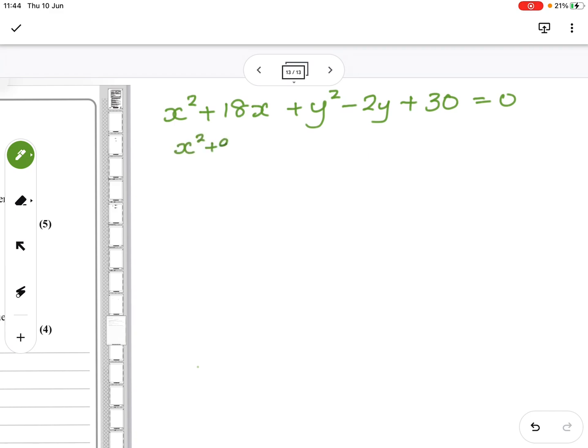So this would become x squared plus 9. No, not x squared, x plus 9 all squared minus 81.